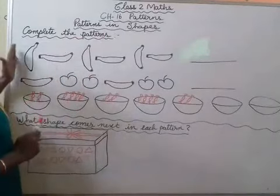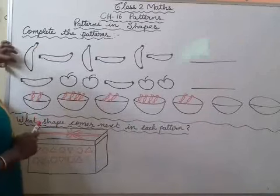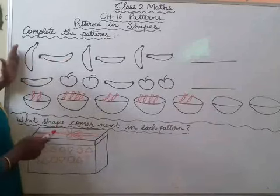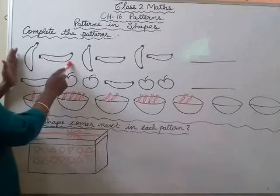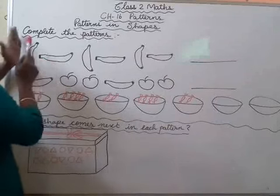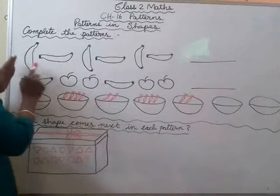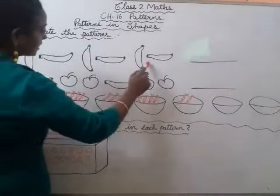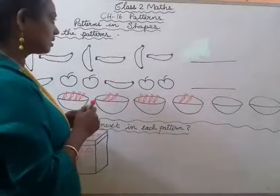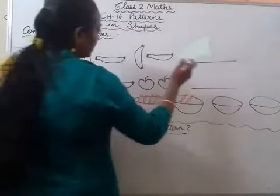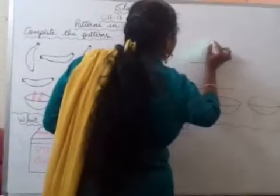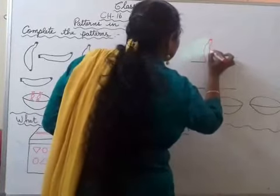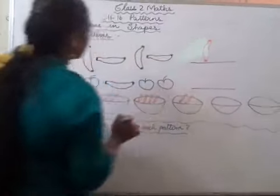Next, complete the patterns. What is the picture given here? These are bananas. Ek toh seedha hai, phir ek toh slipping line mein hai — matlab ek khaade hai, ek toh leta hai. We are going to see the patterns: straight banana, sleeping banana, straight, sleeping, straight, sleeping. Then what will be the next? Straight banana. You have to draw a straight banana.